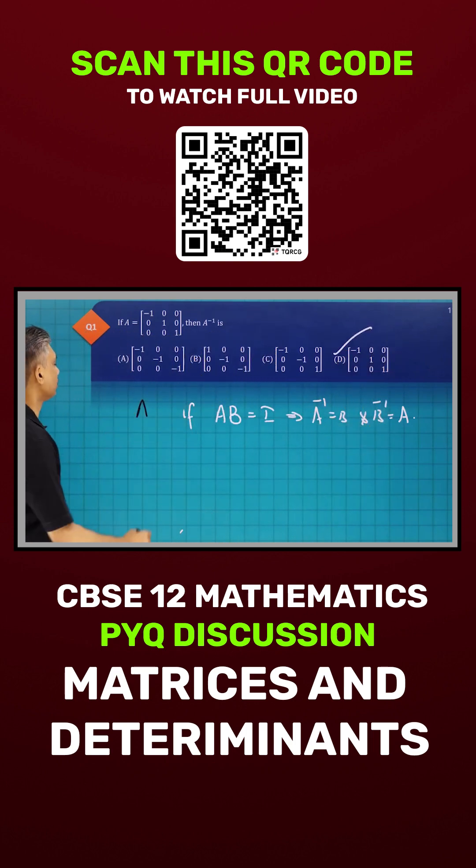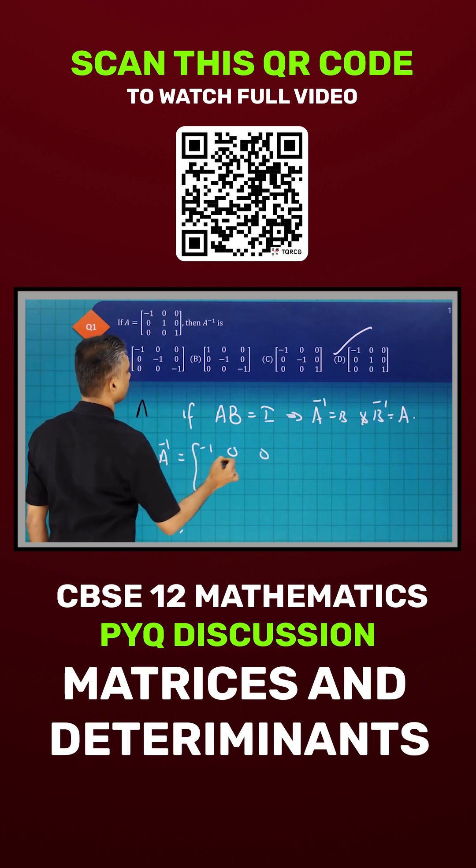It will be D because A into A inverse, you see here: minus 1, 0, 0, 0, 1, 0, 0, 0, 1.